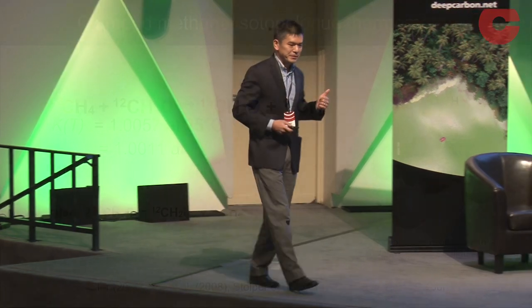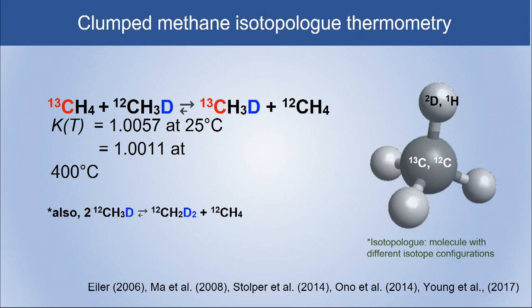Methane is a very simple hydrocarbon. Carbon has two isotopes and hydrogen has two isotopes, and you can make a variety of combinations called isotopologs. Including something called clumped isotopolog methane — methane with carbon-13 and deuterium together — which comprises about 6 ppm of overall molecule fraction. Because this equilibrium is primarily a function of temperature, you can use it as a geothermometer at which methane is either formed or equilibrated internally.